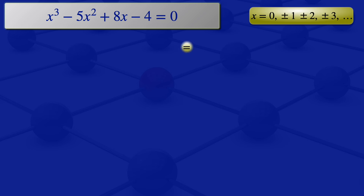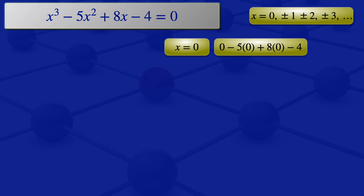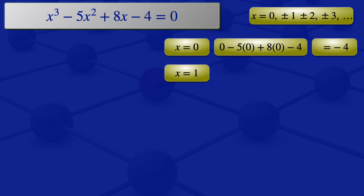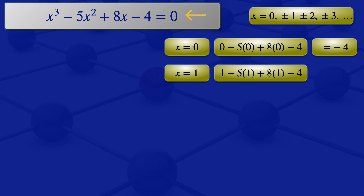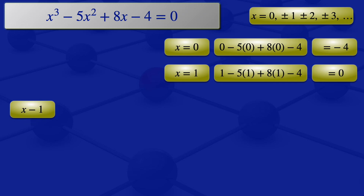Starting with x equals 0, we'd have 0 minus 5 times 0 plus 8 times 0 minus 4, which gives us minus 4 — that doesn't satisfy the equation because it should give us 0. If we try x equals 1, we'd have 1 minus 5 times 1 plus 8 times 1 minus 4, which gives us 1 minus 5 plus 8 minus 4 — that gives us 0. So x minus 1 is a solution and therefore a factor of the polynomial on the left.